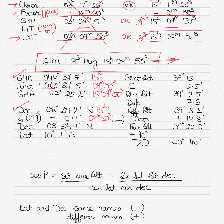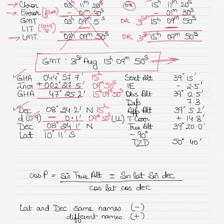The increment is always added to get the corrected GHA. The d-correction for declination is subtracted because the declination was decreasing from 1500 to 1600 hours, giving us the corrected declination. We also write down the DR latitude below the declination, and then proceed to correct the sextant altitude to find the true altitude and true zenith distance.